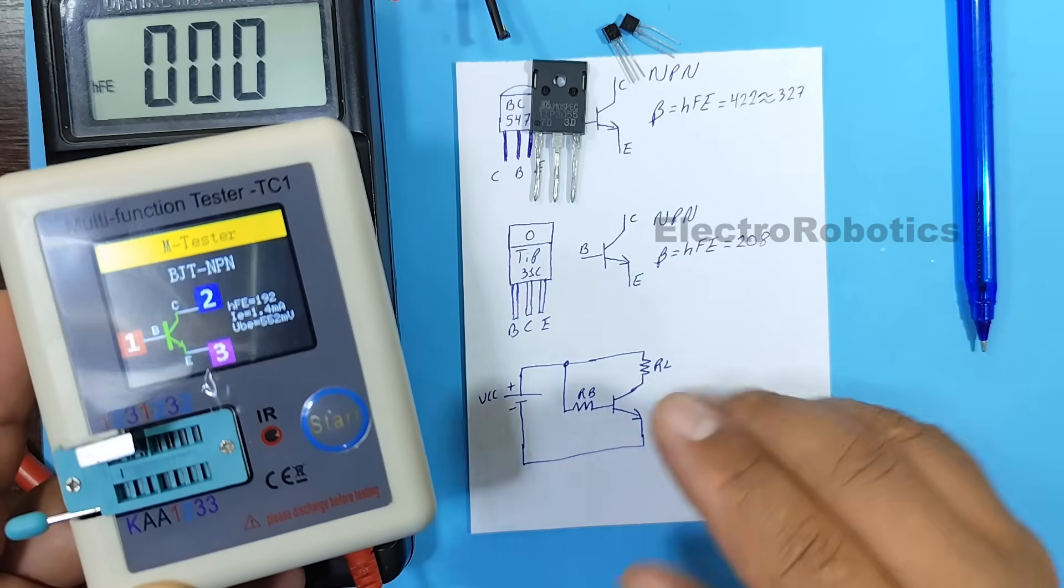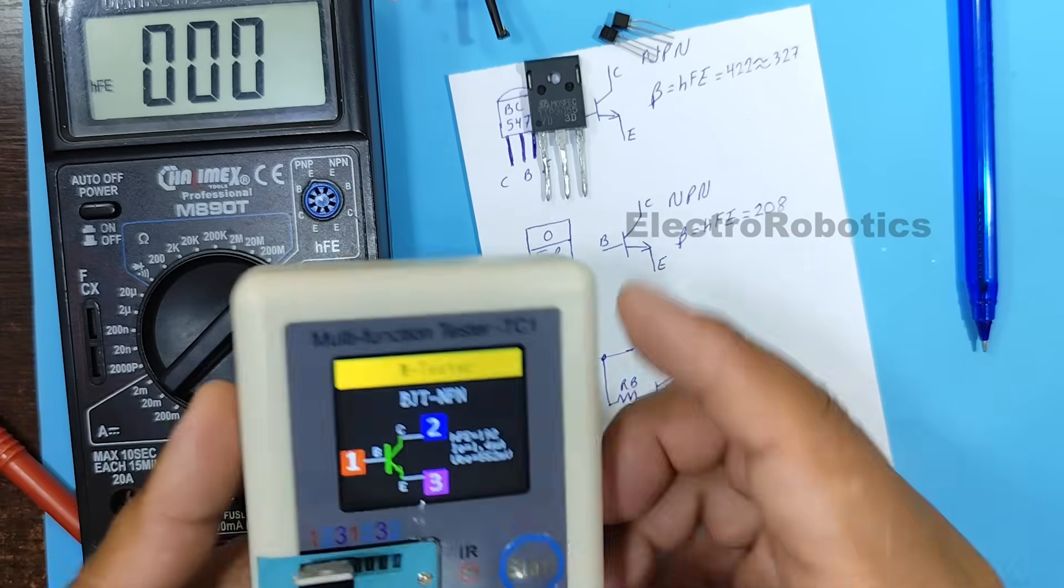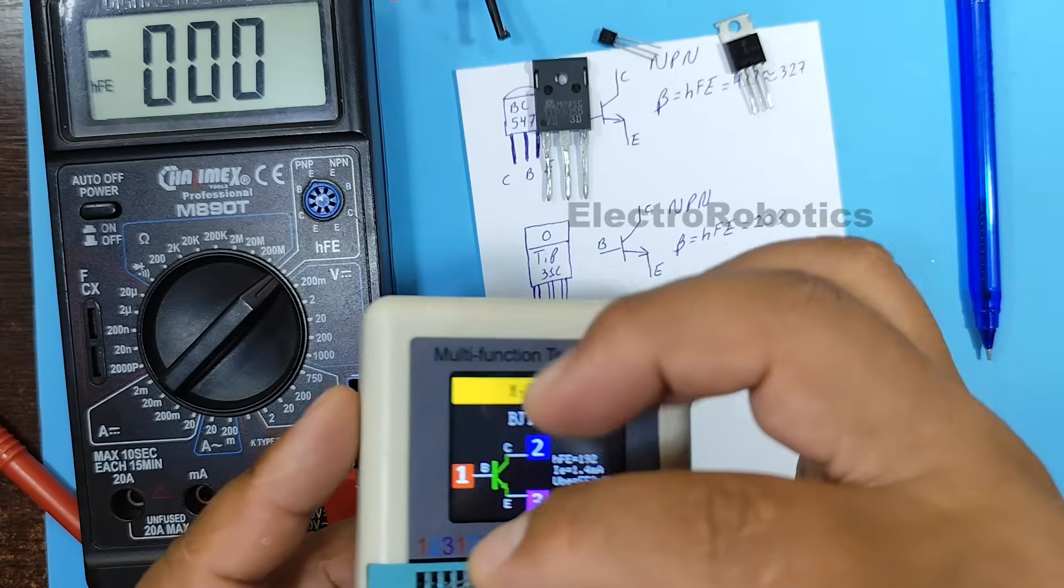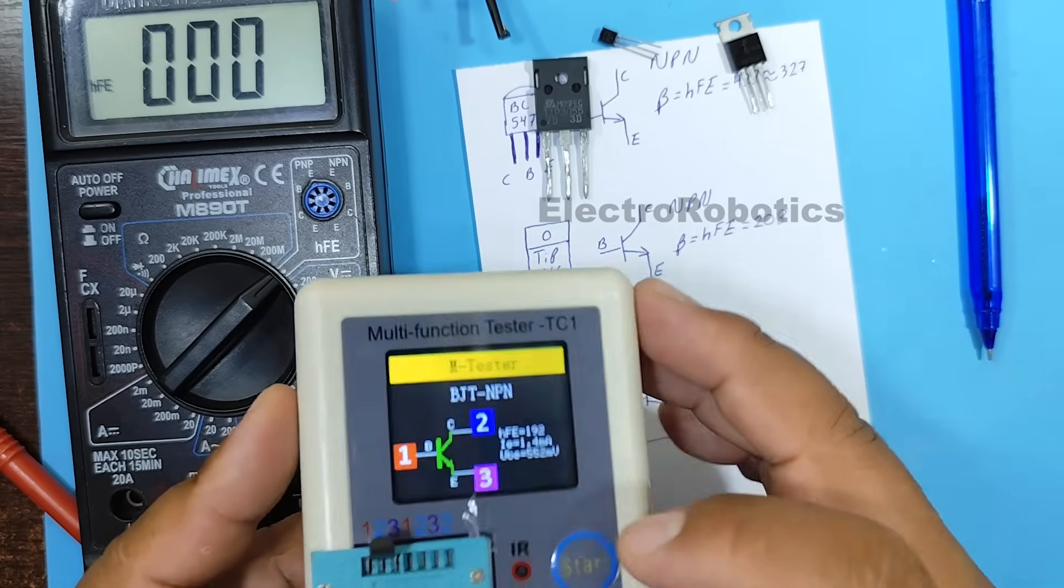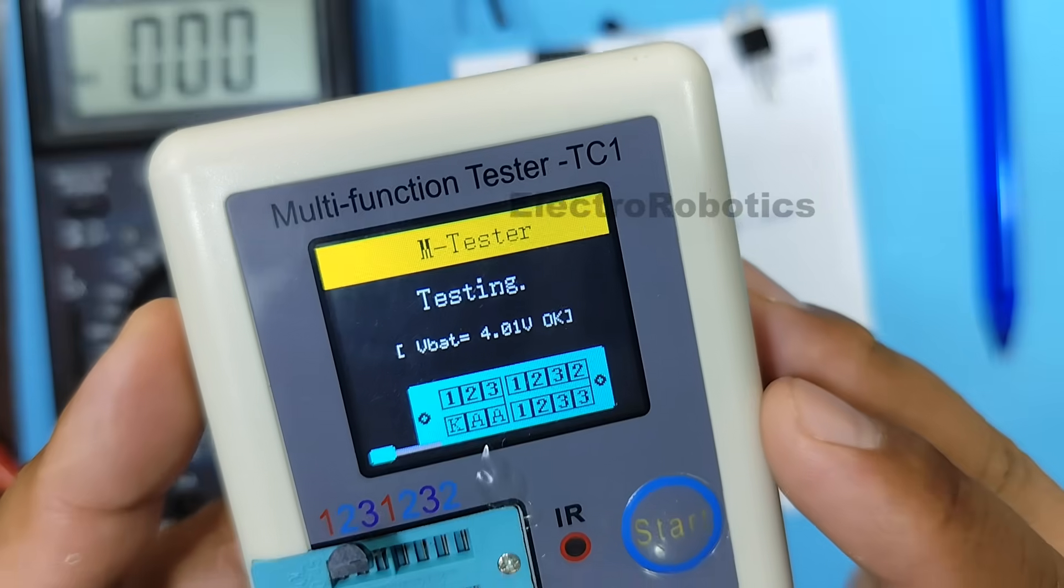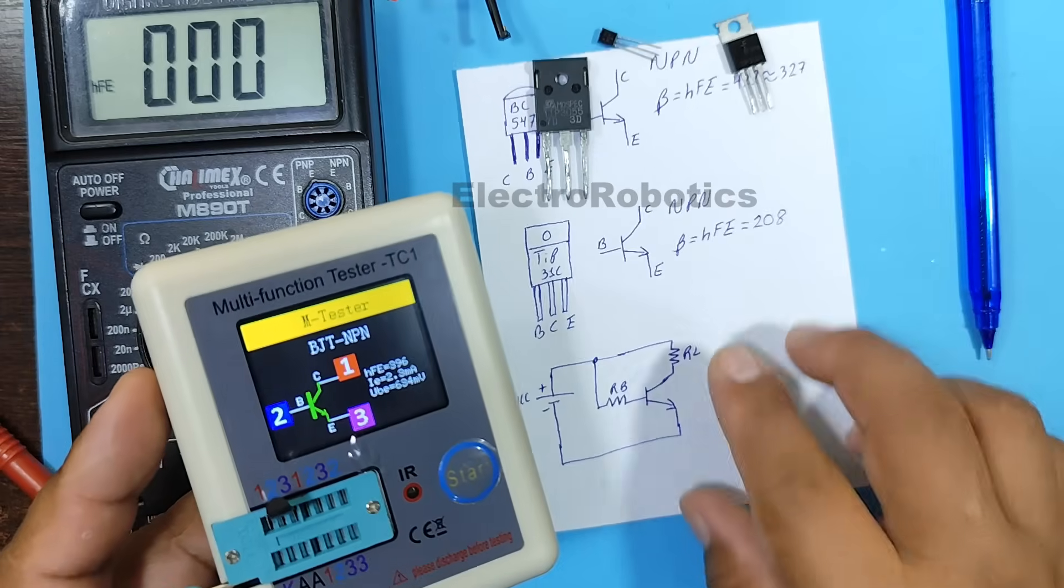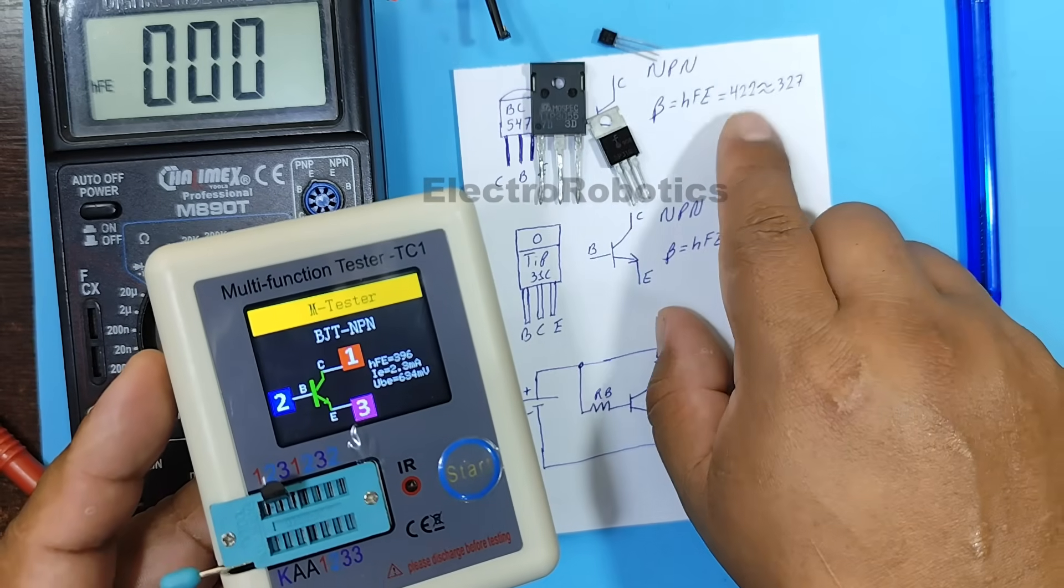And we see that the gain is 192. And here we have 208, which is very similar. Let's look at the other transistor. And we have 396.